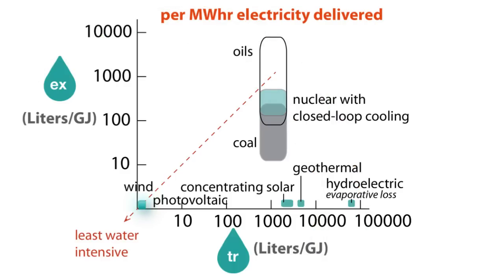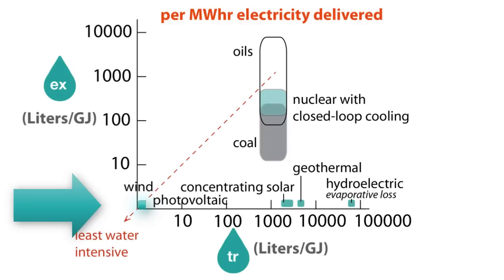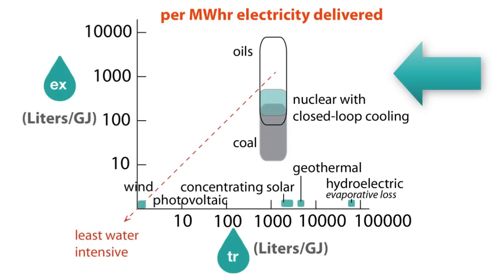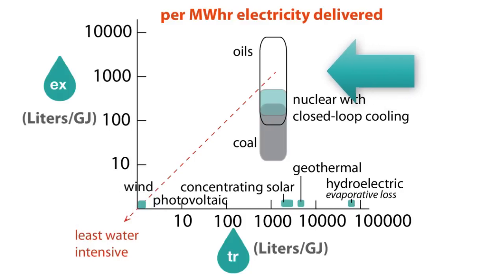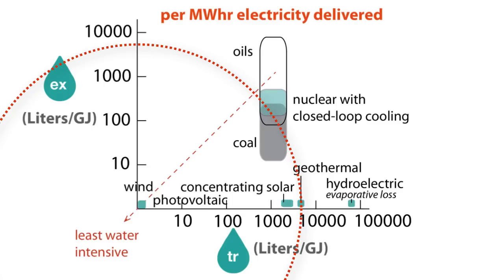Notice that electricity from photovoltaics requires the least water per gigajoule, while in general fossil fuels and nuclear power represent the largest water consumed per gigajoule of electricity produced. Coal and geothermal are about the same.